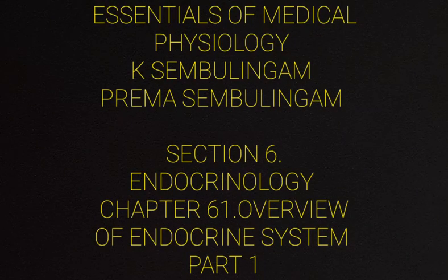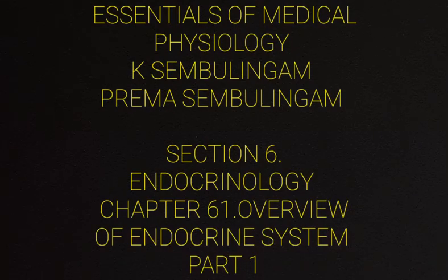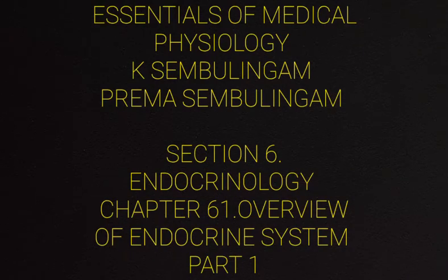Overview of the Endocrine System: All the physiological activities of the body are regulated by two major systems — the Nervous System and the Endocrine System. These two systems interact with one another and regulate the body functions.